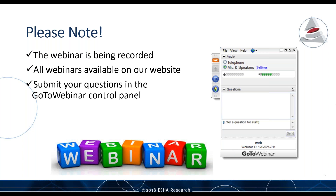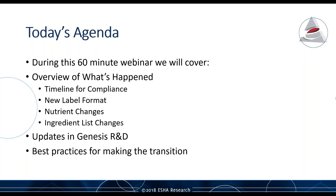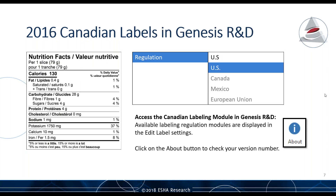Please submit any questions during the webinar — we'll do Q&A at the end, but ask right away and we'll answer as we can. For complex questions requiring research, we'll follow up afterward. Today's agenda covers about an hour: an overview of Canada's compliance timelines, new label formats, nutrient changes, ingredient statement changes, updates inside Genesis, and best practices. I'll hand it over to Alicia. Thanks Ben — today we're talking about Canadian nutrition facts table labeling regulations and Genesis features to help you move from the 2003 to the 2016 label formats.